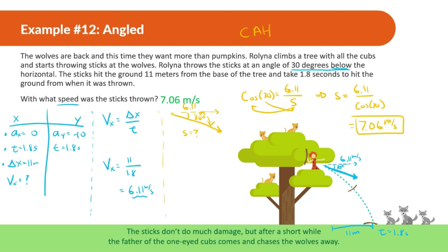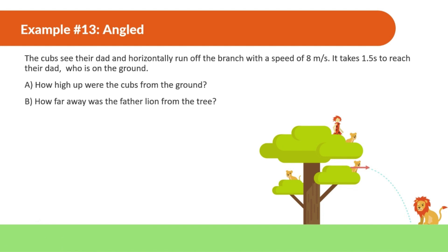The sticks don't do much damage. But after a short while, the father of the one-eyed cubs — the one-eyed lion — comes and chases the wolves away. The cubs see their dad and horizontally run off the branch with a speed of 8 meters per second. It takes 1.5 seconds to reach their dad who is on the ground. Part A: how high up were the cubs from the ground? Part B: how far away was the father lion from the tree?